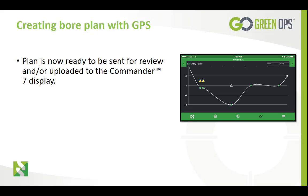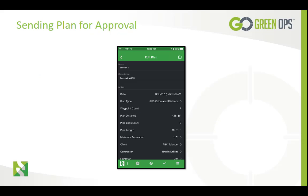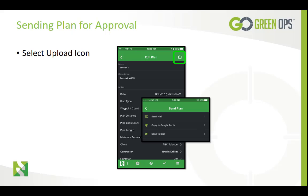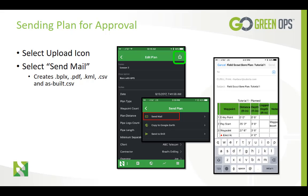This plan is now ready to be sent for approval and/or uploaded to your Commander 7 display. Uploading your plan to the Commander 7 will be covered in a later tutorial. In the previous lesson we showed you how to send the plan for approval by going back to the menu screen. Now we will show you a shortcut to the email upload functions. Start by selecting the upload icon. The next screen gives you the option of sending the plan via email. Since we want to send this for approval, select Send Mail. When Send Mail is selected, Field Scout will compile five attachments in the email. Fill in the recipient email address, then select Send.